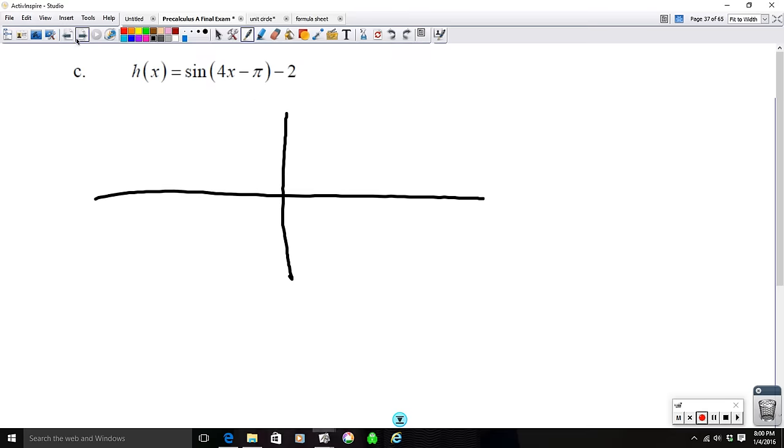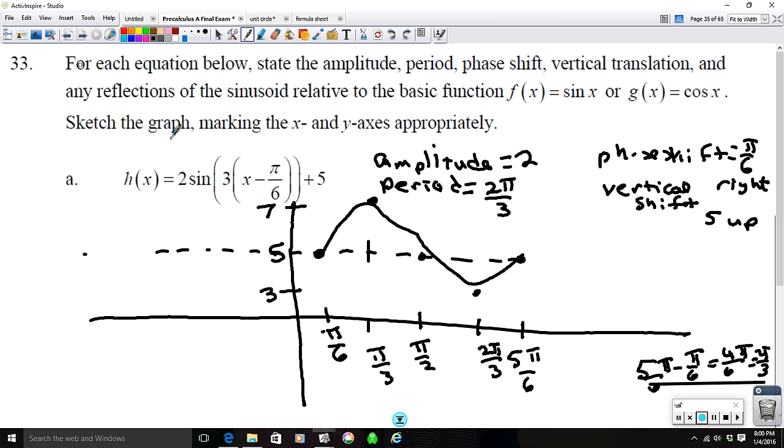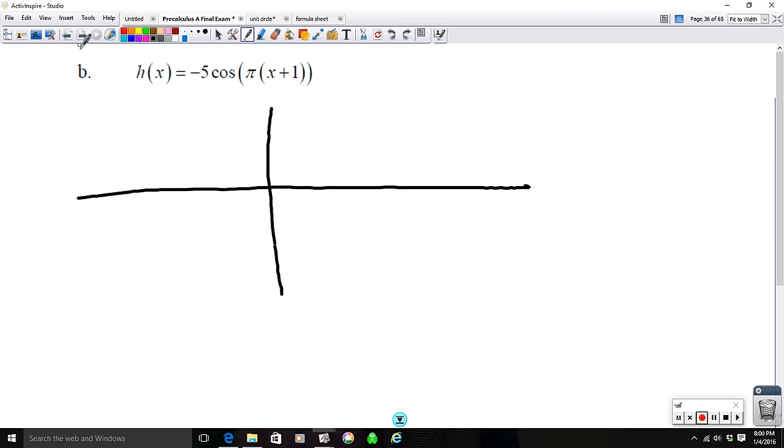Next one. Let's see, make sure we answered all the questions. They said sketch the graph marking the x's and y-axis appropriately, which we did. Part b. So for this equation here, the amplitude is going to be equal to the absolute value of negative 5, which is 5.